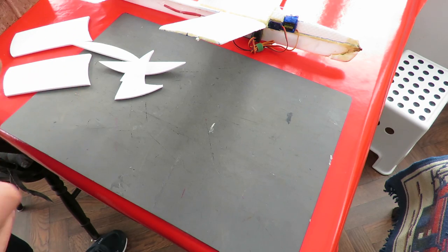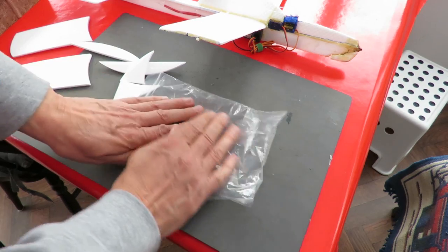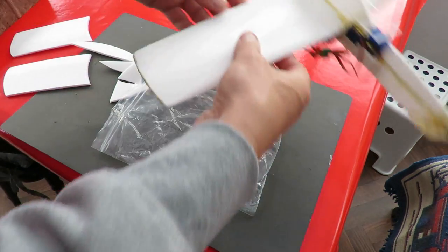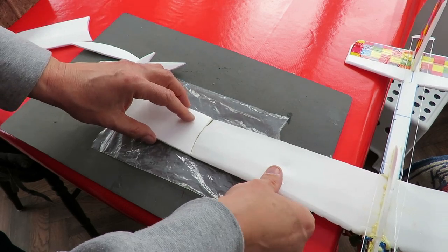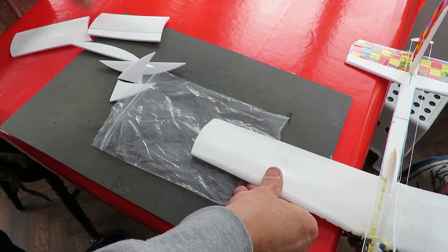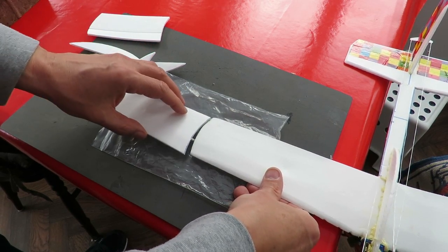I'll just do one side at a time. Put that on the bottom so that the glue doesn't stick to my table. If we use the right piece - yeah, that's the right piece.